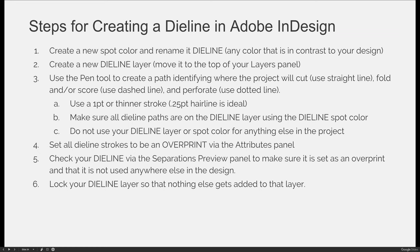Once you've created your dye line on the dye line layer using the dye line spot color, you need to make sure that the stroke or path is set to overprint via the attributes panel. If you leave it as is, it's vector art, and vector art by default is a knockout. When we print a knockout, we leave a hole underneath whatever we're printing so that the color hits unprinted paper — that's bad for a dye line because we're not going to print the dye line along with the rest of the artwork.